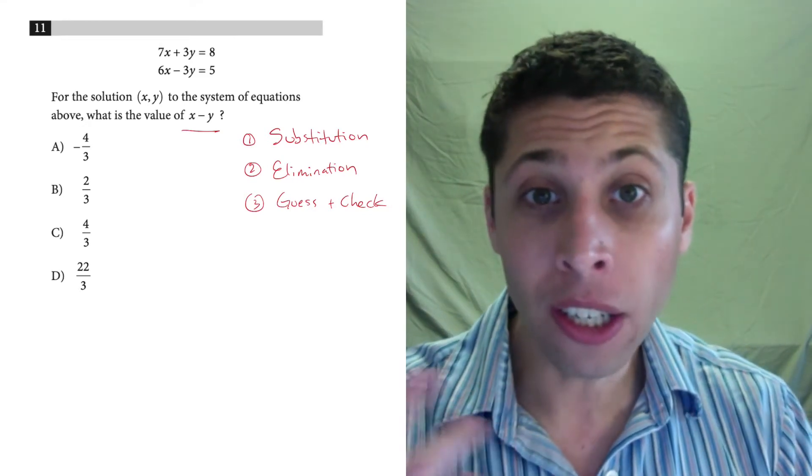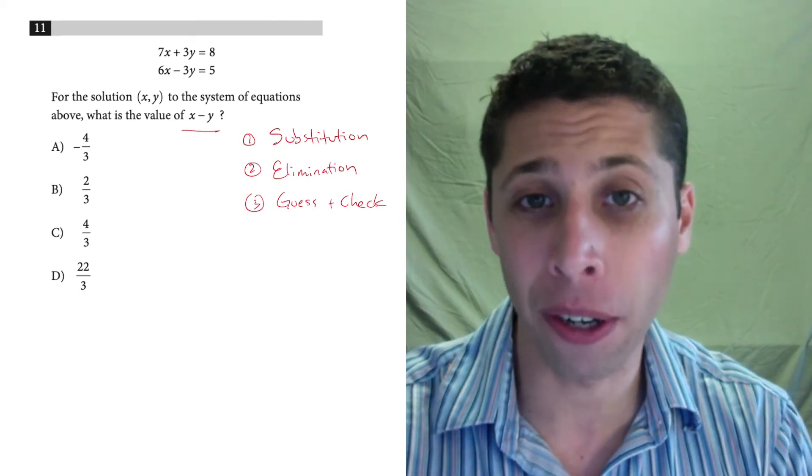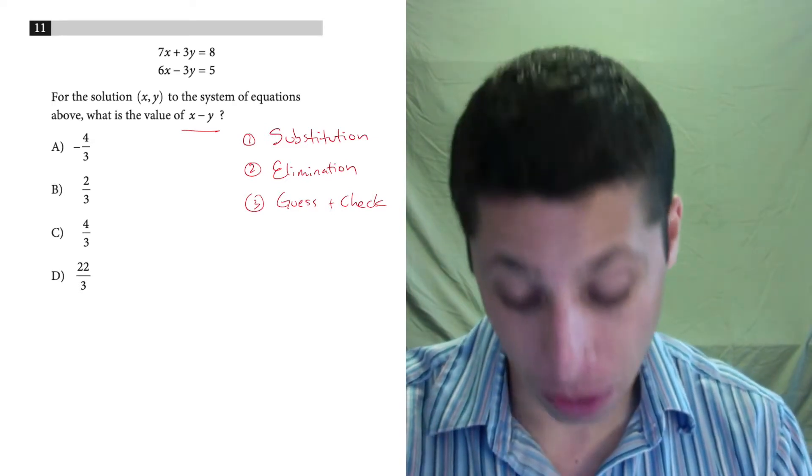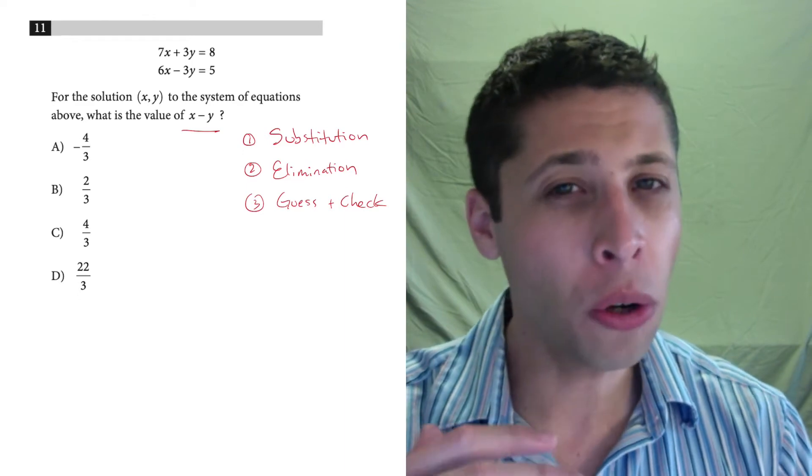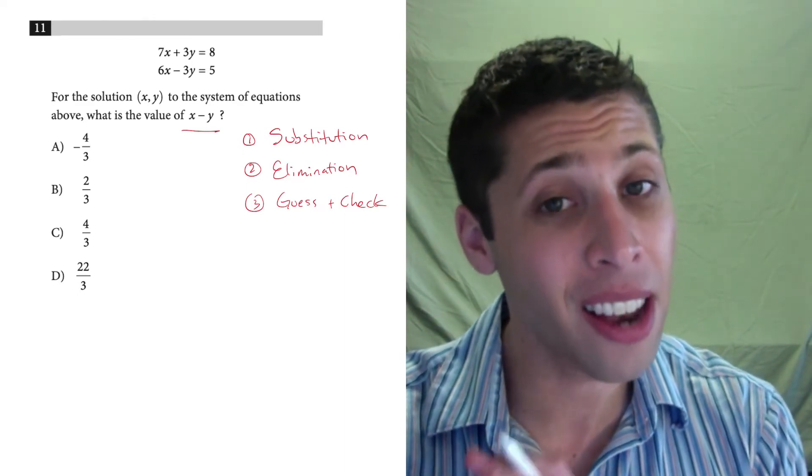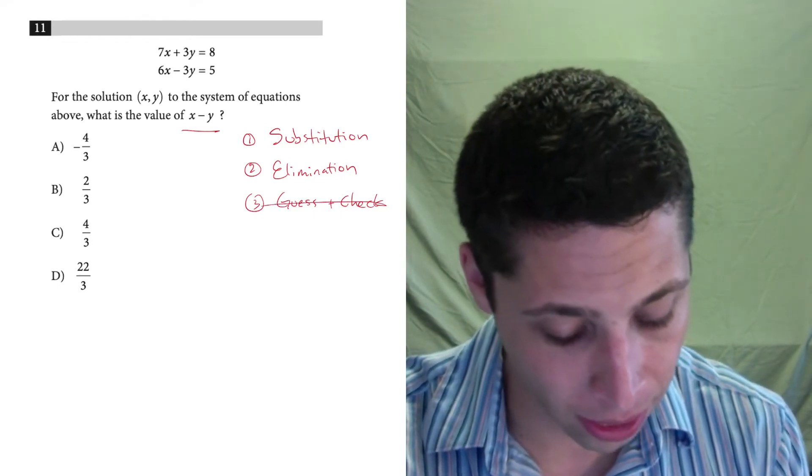So I don't really know what x minus y is just by looking at these answer choices because there's an infinite number of values of x and y that could produce, let's say, two-thirds as the answer. So there are cases where guess and check will work. This is not one of them because of the complexity of the answer choices. So unfortunately, that's not going to work.